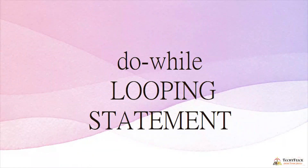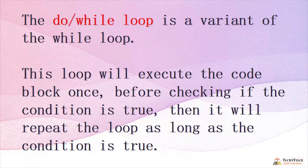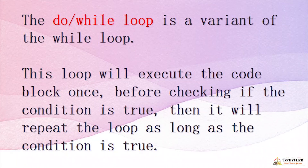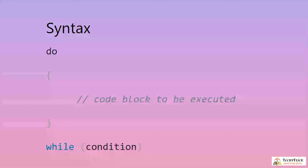The do-while loop is a variant of the while loop. It executes the code block once before checking if the condition is true, then repeats the loop as long as the condition is true. Syntax: do { code block } while(condition). The loop always executes at least once even if the condition is false.